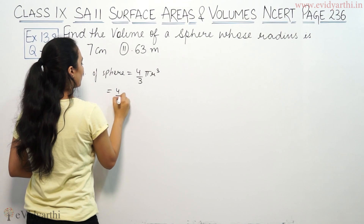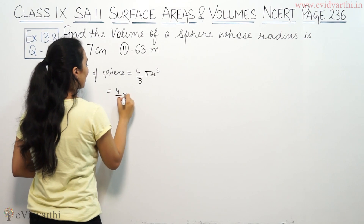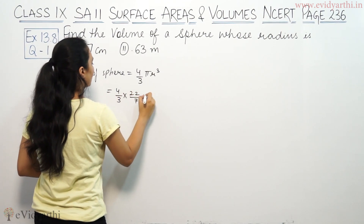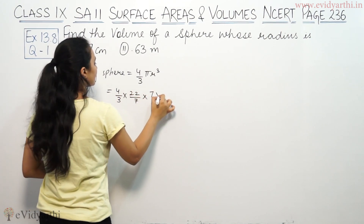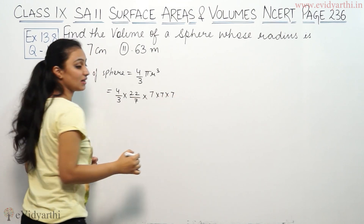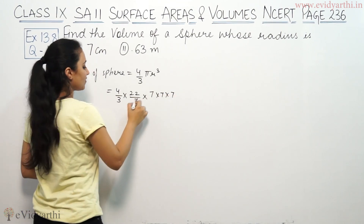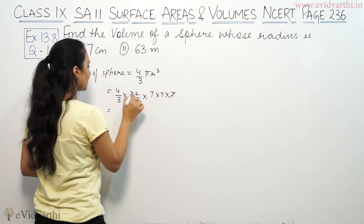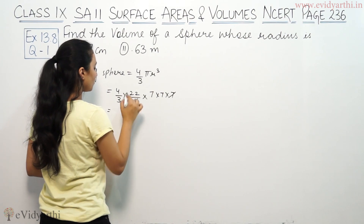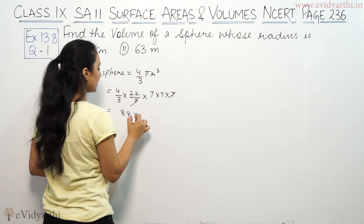This will be 4 by 3. Pi value is 22 by 7. And radius is 7, so we have 7 into 7 into 7. The 7 in the denominator and numerator cancel out. So we are left with 22 into 4, which is 88.